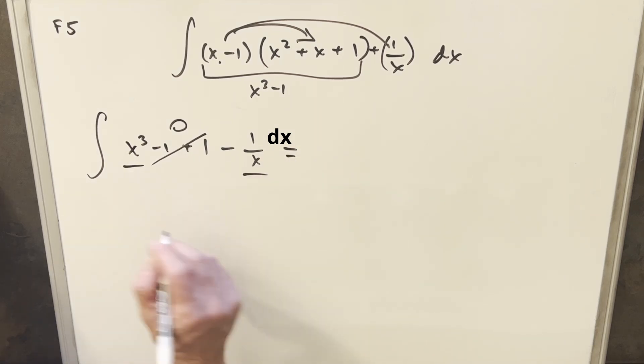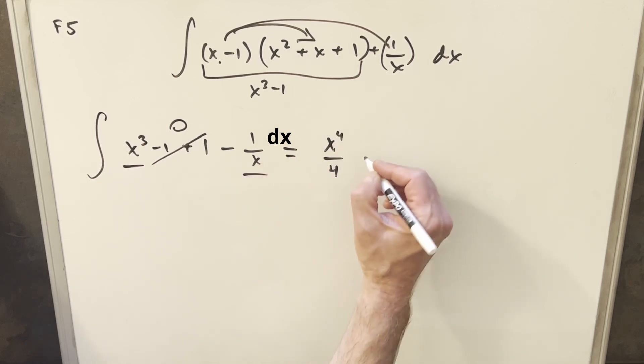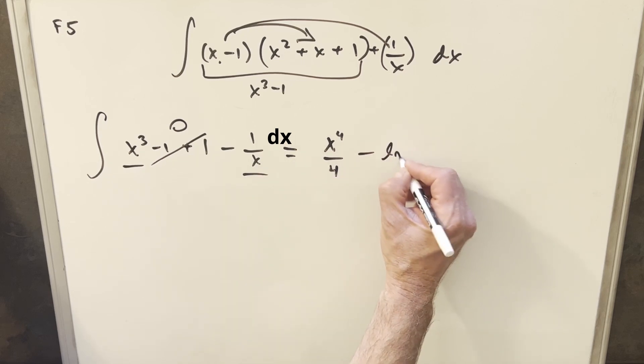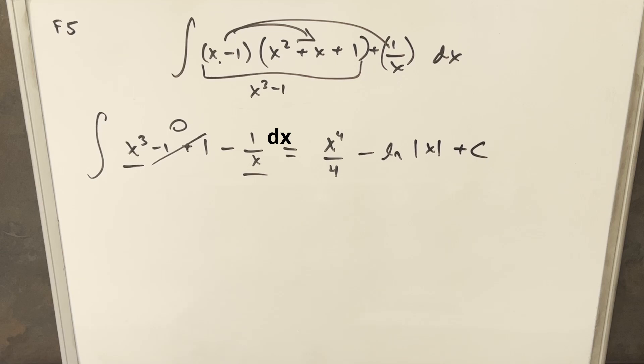So if I integrate x cubed with the power rule, I get x to the fourth over four. Then the last piece we're going to have integral this going to be natural log absolute value of x plus c and that's it.